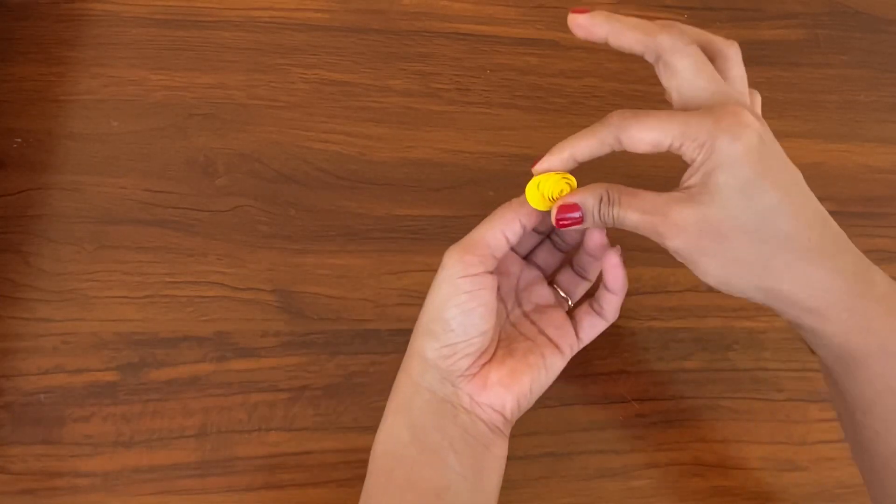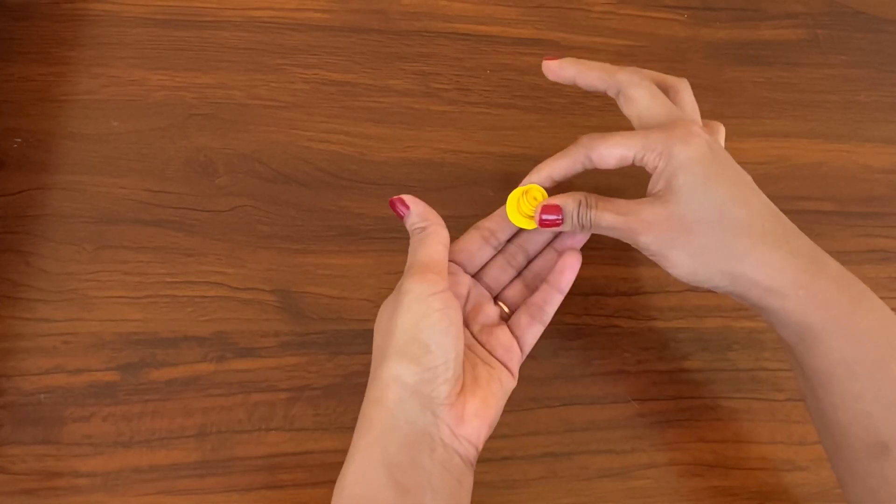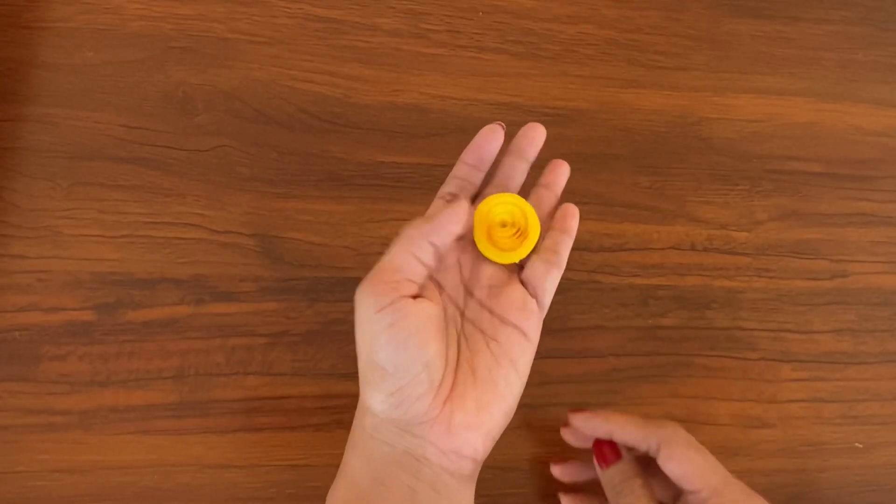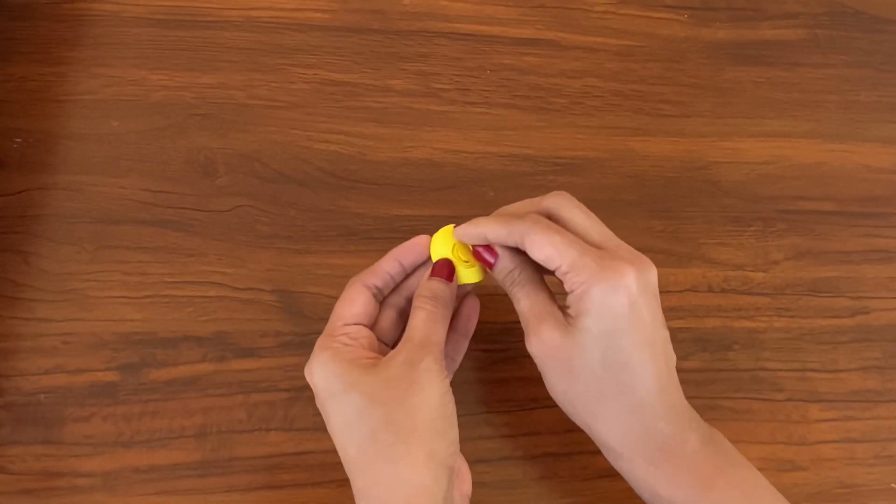Once you've reached the end just leave it like this and your flower is ready. Now let's just secure the base with some glue.